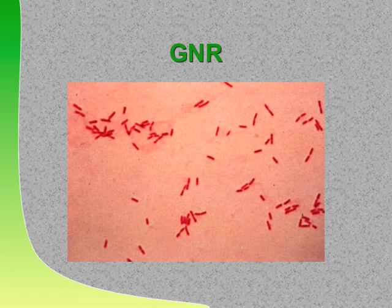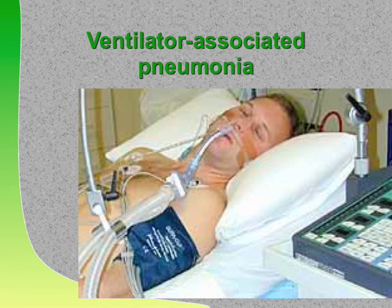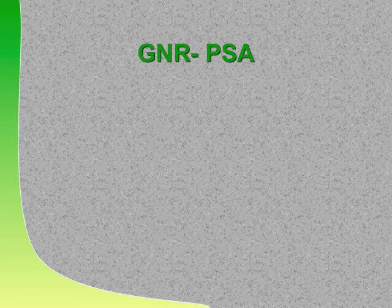Let's start with gram-negative rods. A patient has ventilator-associated pneumonia, so we need a drug with gram-negative rod activity. What's the fourth-generation cephalosporin that has pseudomonal activity? Cefepime. And what third-generation cephalosporin has pseudomonal activity? Ceftazidime. What penicillin derivative has pseudomonal activity? Piperacillin-tazobactam—they don't sell piperacillin alone anymore. The cousin is called Timentin.